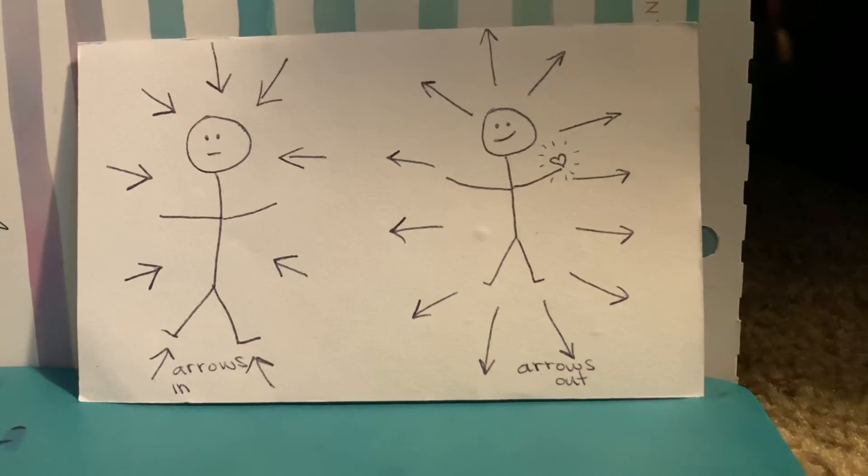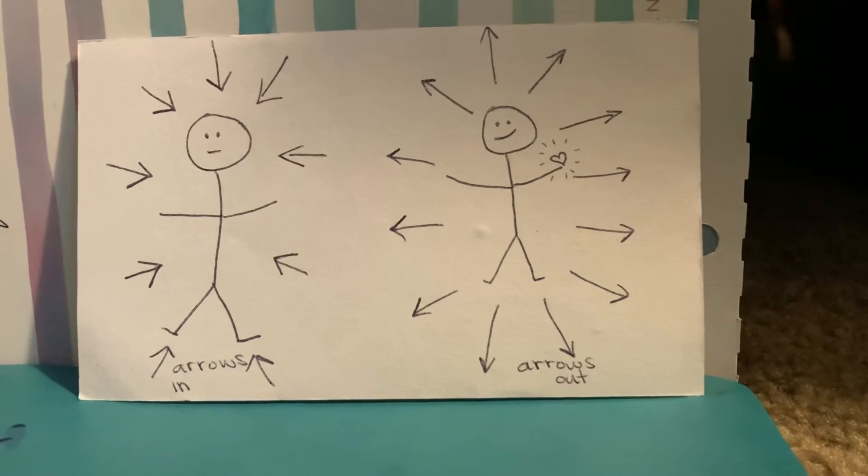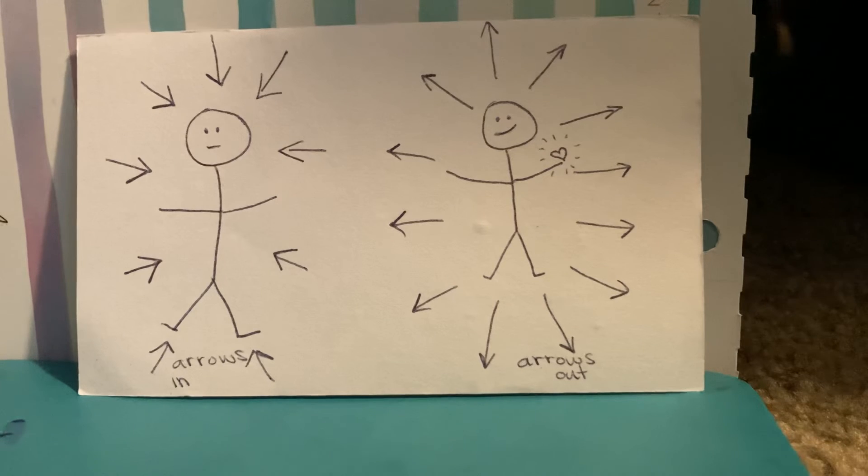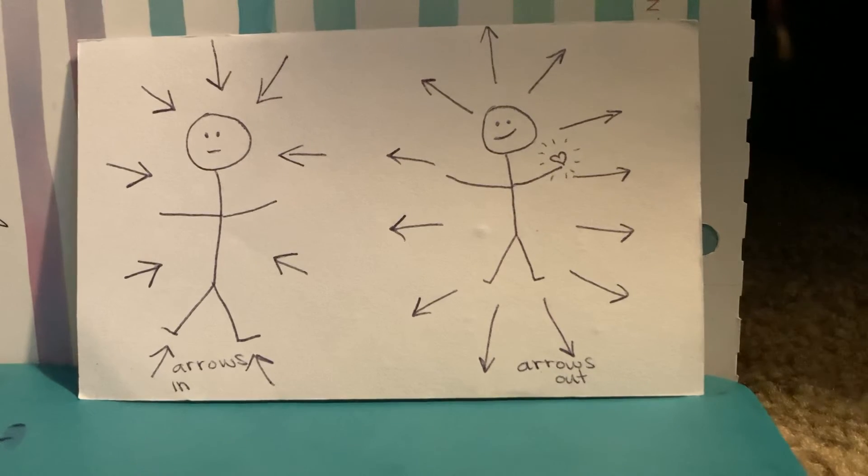Imagine the stick man again, but this time the arrows surrounding him are pointed outward because his focus is on those around him. He wants to use his time and energy to make sure others have the contentment he has achieved, not for his sake, but for theirs.